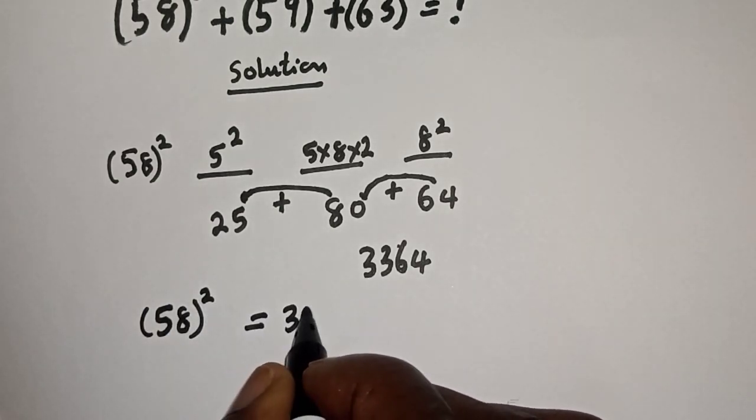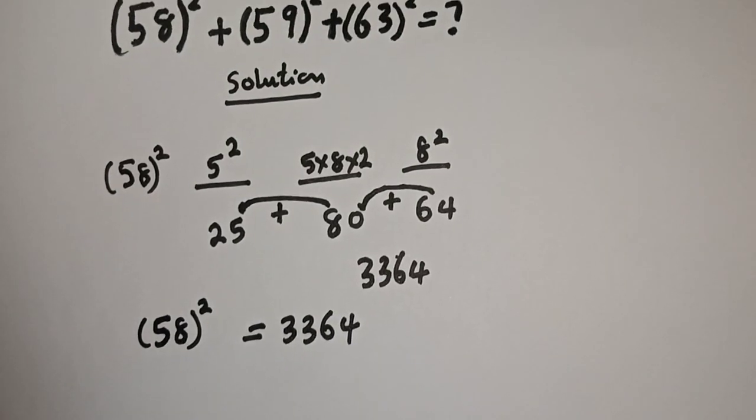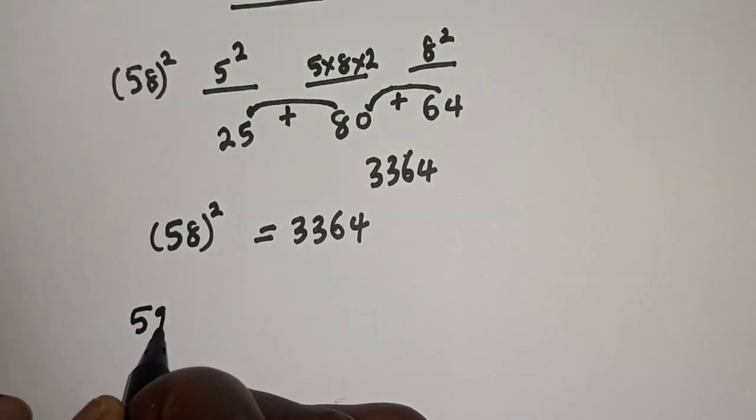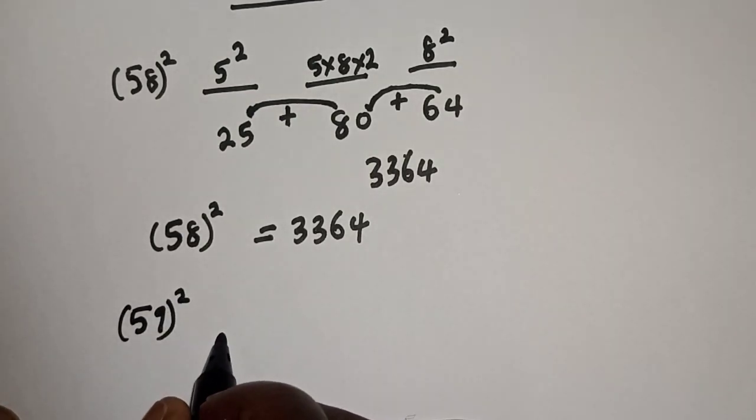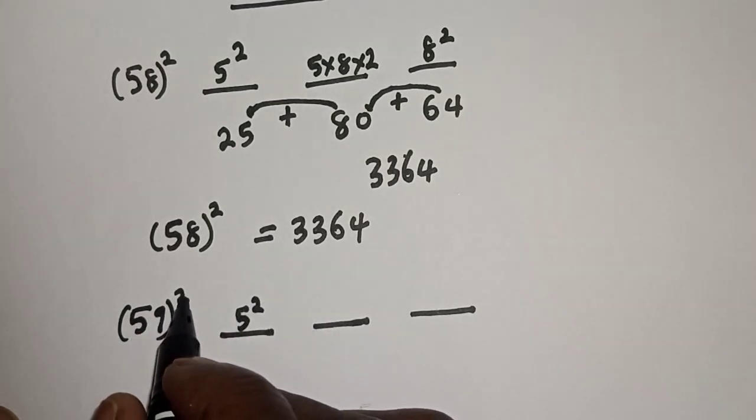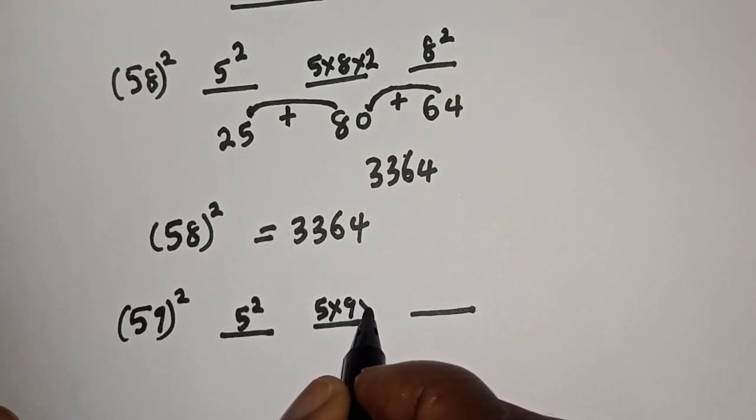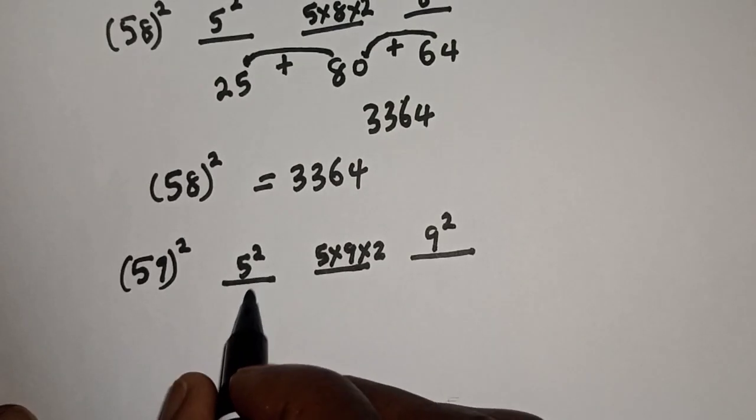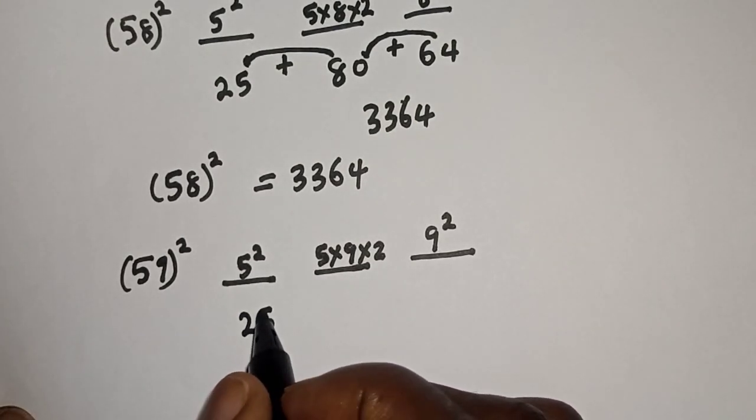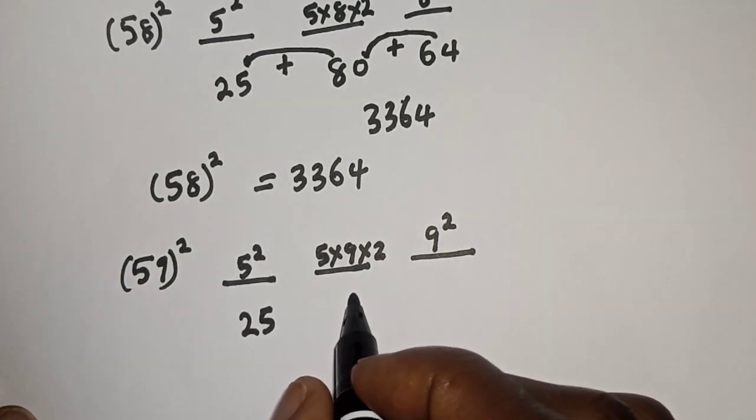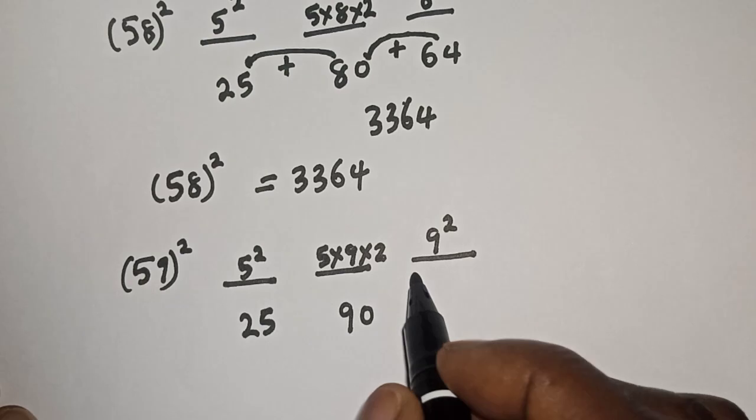So you can see this trick. Now let's work with 59 square. Let's use the same method. The first one is 5 square, and here is 5 times 9 multiply by 2, and the last one is 9 square. 5 square is 25, then 5 multiply by 9 multiply by 2, this is 90, and here is 9 square that is 81.